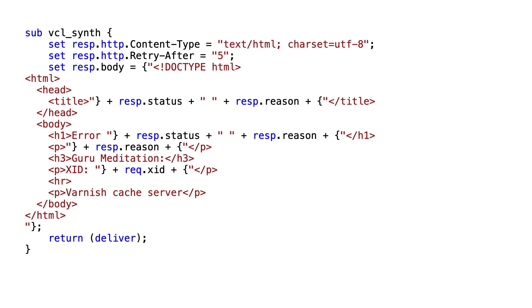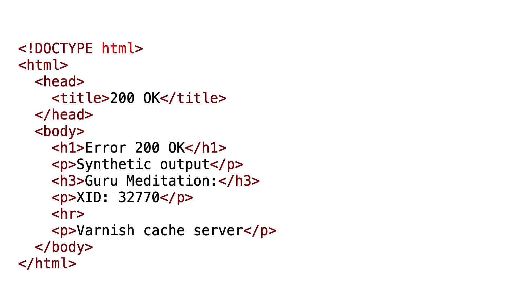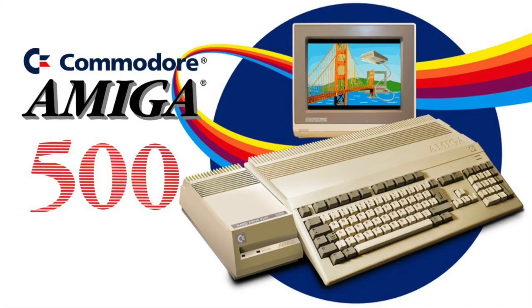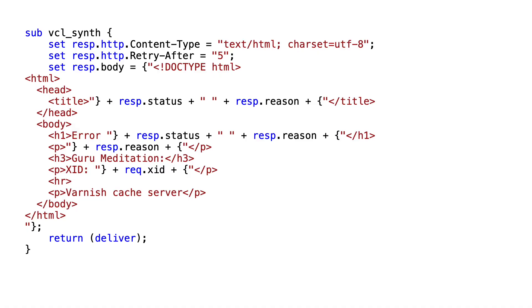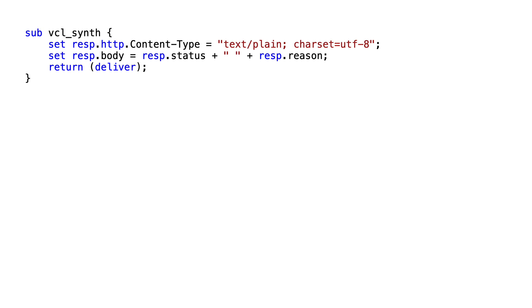The challenge with synthetic output is the default template you get started with — it's HTML and part of VCL Synth's built-in behavior. It contains the Guru Meditation error message, which comes from the Amiga 500 — one of the first popular gaming computers. The reason it's there is mostly because it's so bad that everyone realizes they need to customize it, which makes it better. You do that in VCL Synth by changing the response template where variables like the status code and actual message are interpolated.